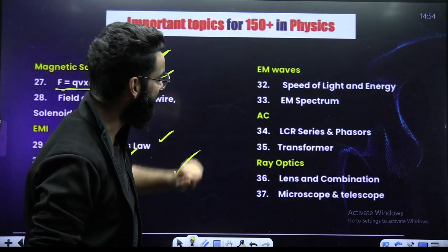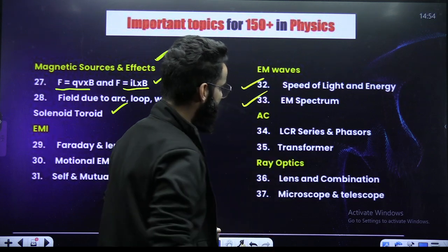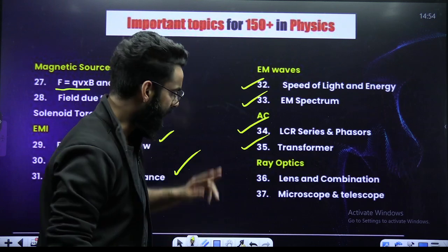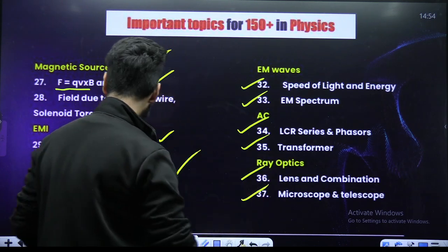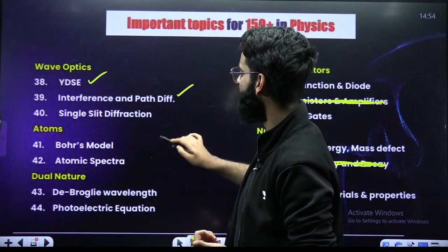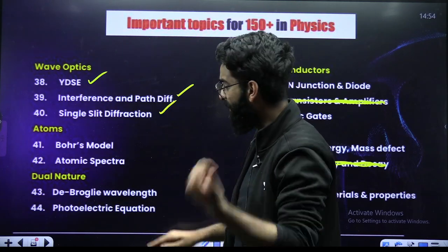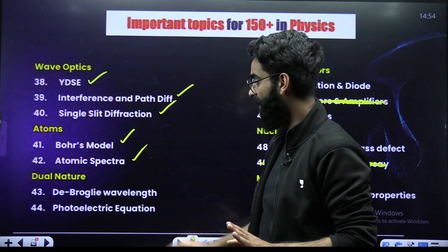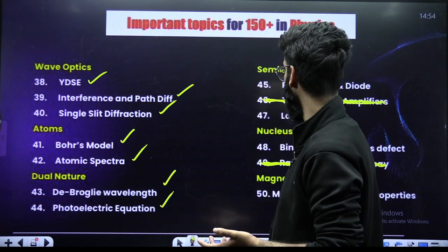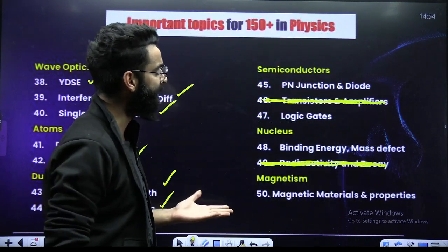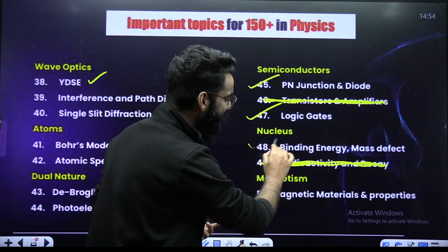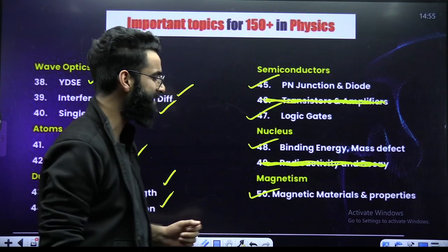When it comes to EM Waves: speed of light and energy, electromagnetic spectrum. Then you've got AC, LCR circuit, phasors, transformers. Ray Optics: lens and combination, microscope and telescope. Wave Optics: YDSE — interference, path difference, single slit diffraction. From Atoms: Bohr's model, atomic spectra. Dual nature: de Broglie wavelength, photoelectric equation. Then semiconductors — PN junction, diode and logic gates. From nucleus: binding energy, mass defect. From magnetism: magnetic materials and properties.